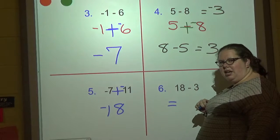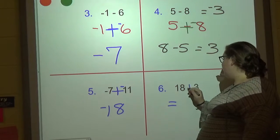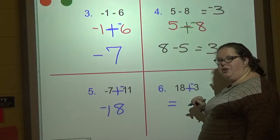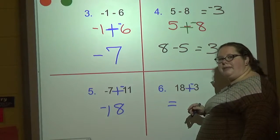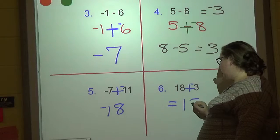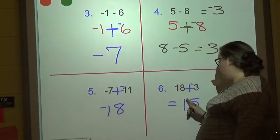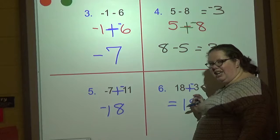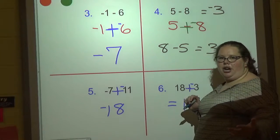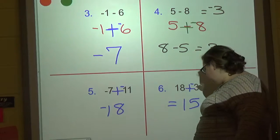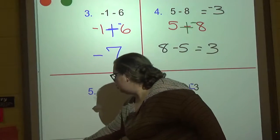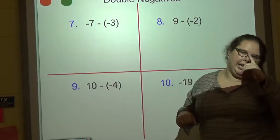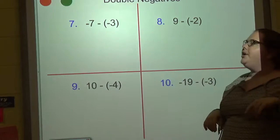Last one: eighteen minus three. We can make that plus a negative three. They're opposite signs — subtract. Eighteen is bigger, so the answer is positive fifteen. Kind of silly — eighteen minus three, you learn that in second grade, just subtract them.